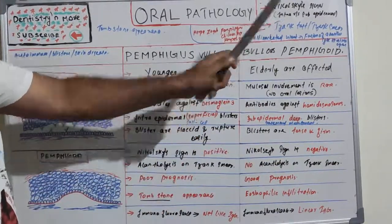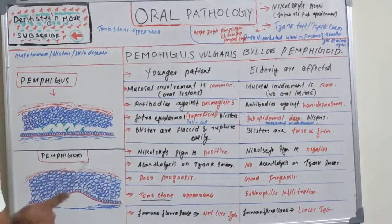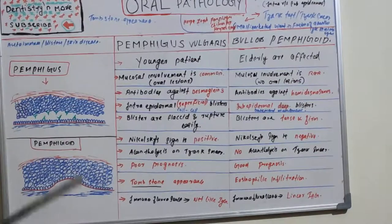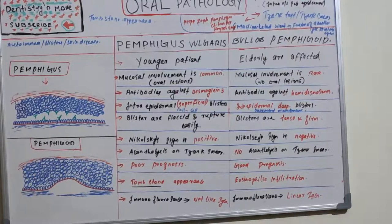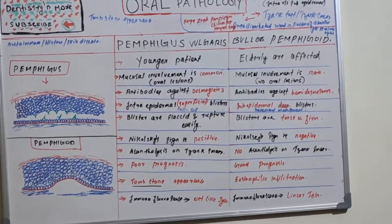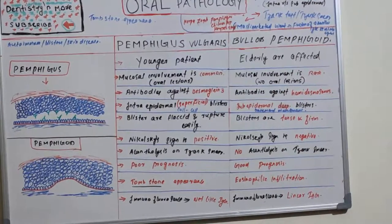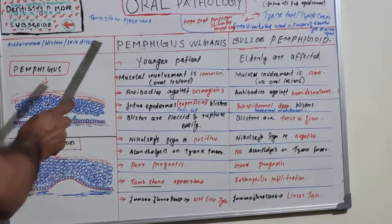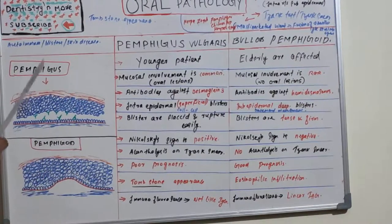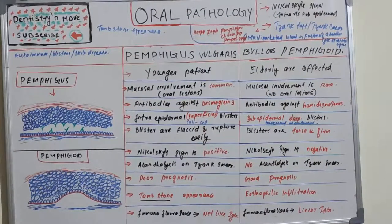Nikolski sign is used to identify intra- versus sub-epidermal blisters. It is seen in pemphigus vulgaris and also in Stevens-Johnson syndrome. It is a significant indicator of active acantholysis and altered structural integrity within the epidermis, which allows a physician to determine the level of split in the skin and distinguish between intra-epidermal and sub-epidermal blistering diseases in the clinical setting.